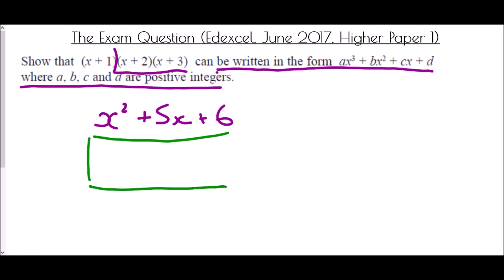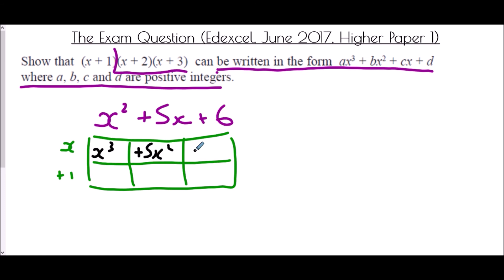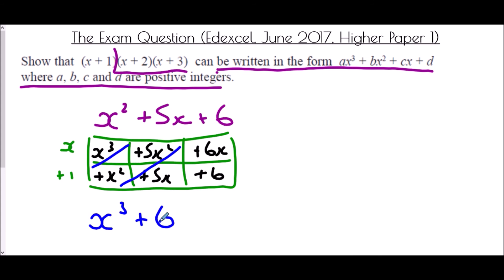Then I multiply that by the other bracket, x plus 1. So: x cubed, plus 5x squared, plus 6x, then plus x squared, plus 5x, and plus 6. Simplifying: x cubed, x squared plus 5x squared is plus 6x squared, 6x plus 5x is plus 11x, and plus 6.